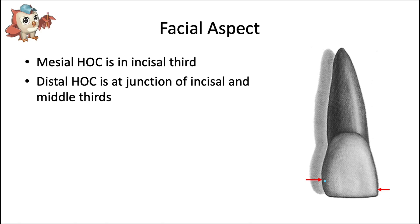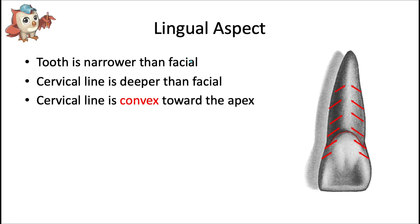Here's an important trend: height of contours and proximal contacts start more incisally at the midline and move cervically as you go distally or posteriorly around the arch. So the contact between the two central incisors is in the incisal third, while the contact between two molars is in their middle thirds. An easy mnemonic: incisors contact incisally and molars contact in the middle — I and I, M and M.